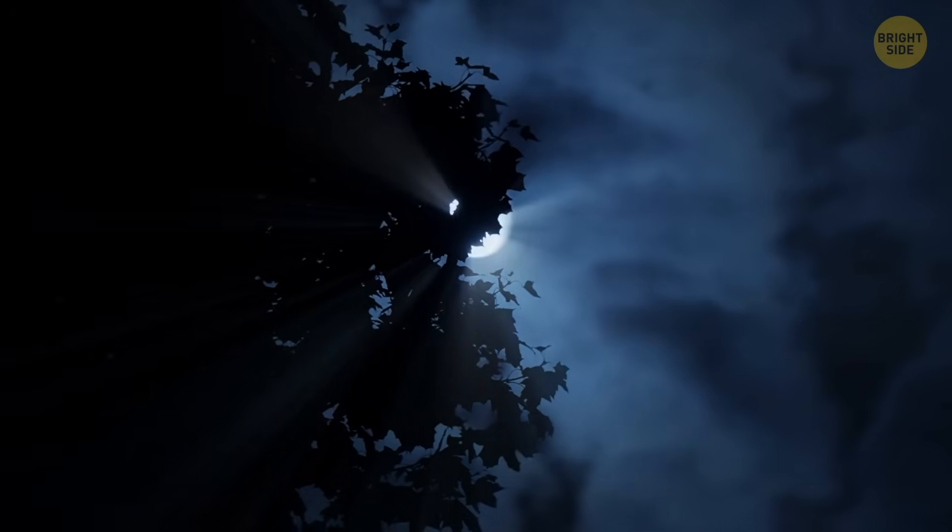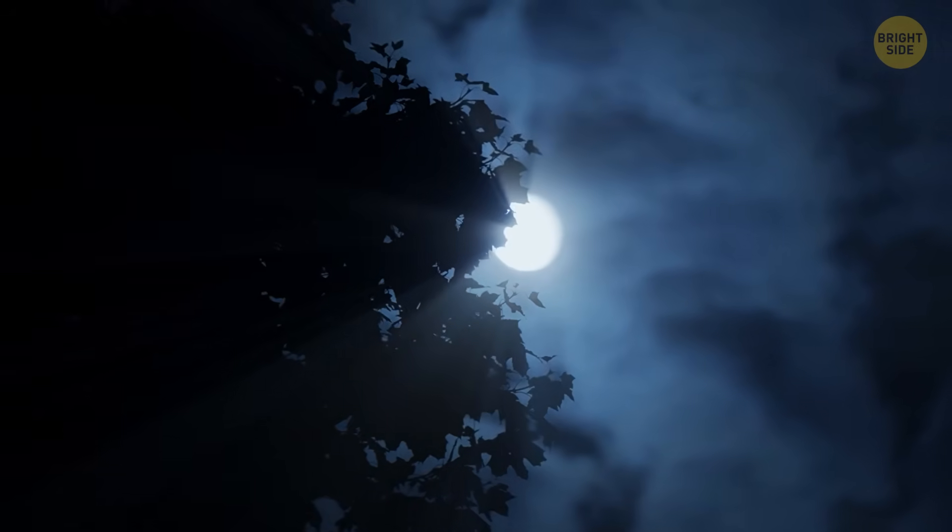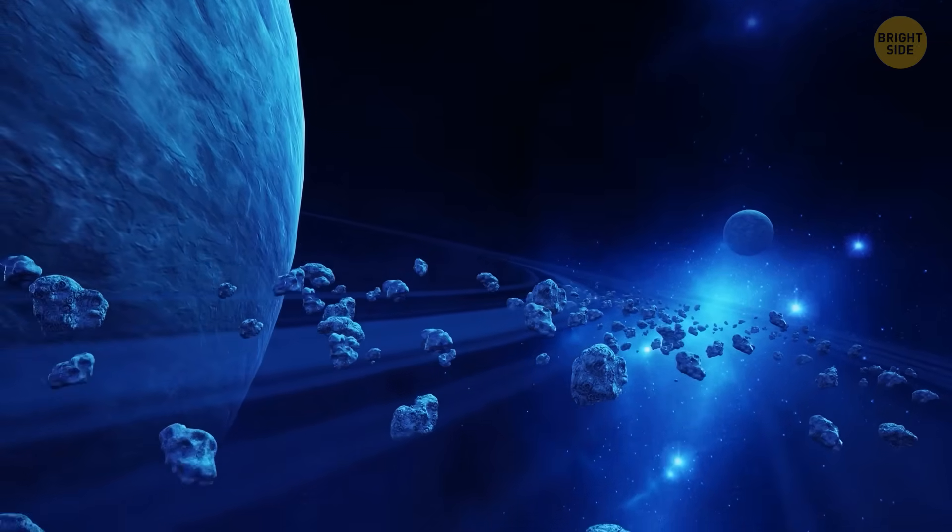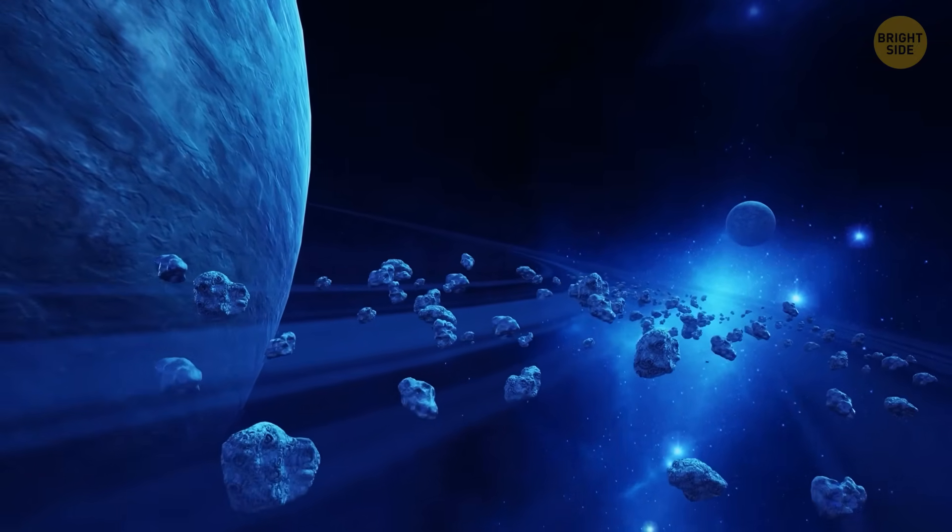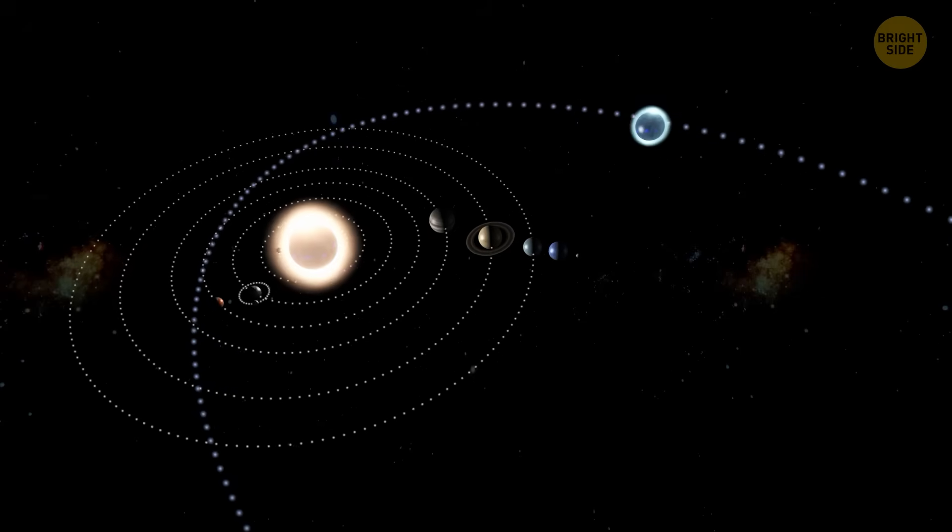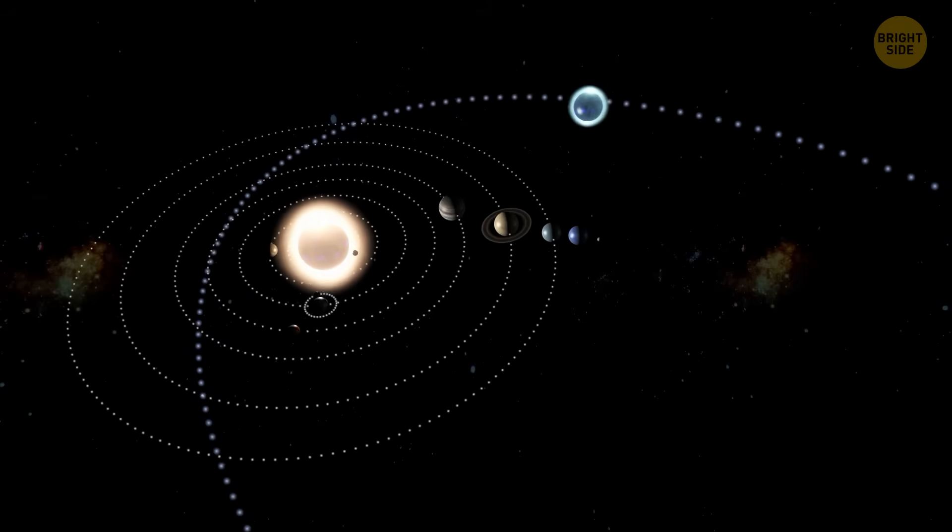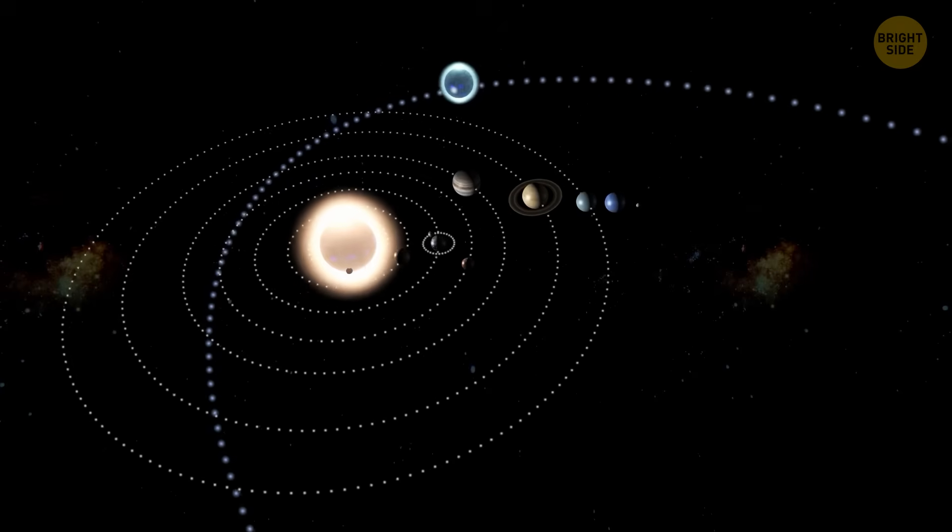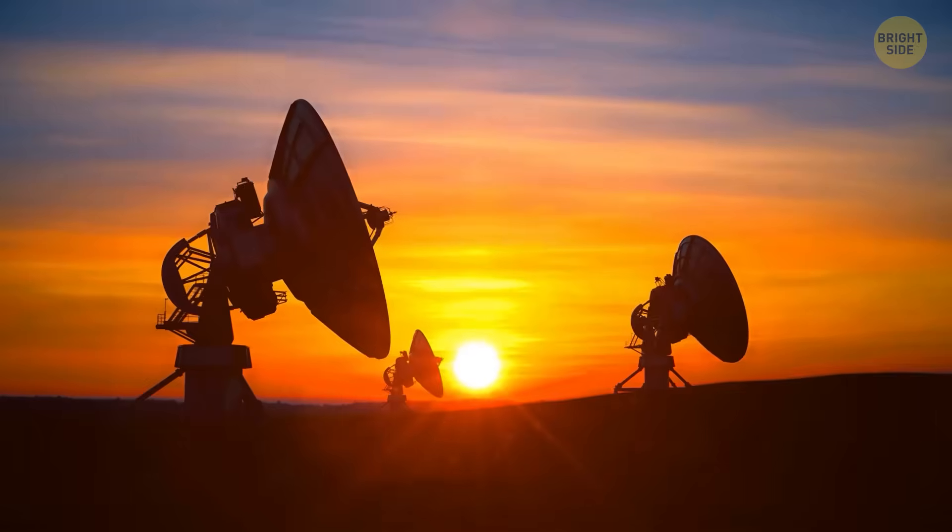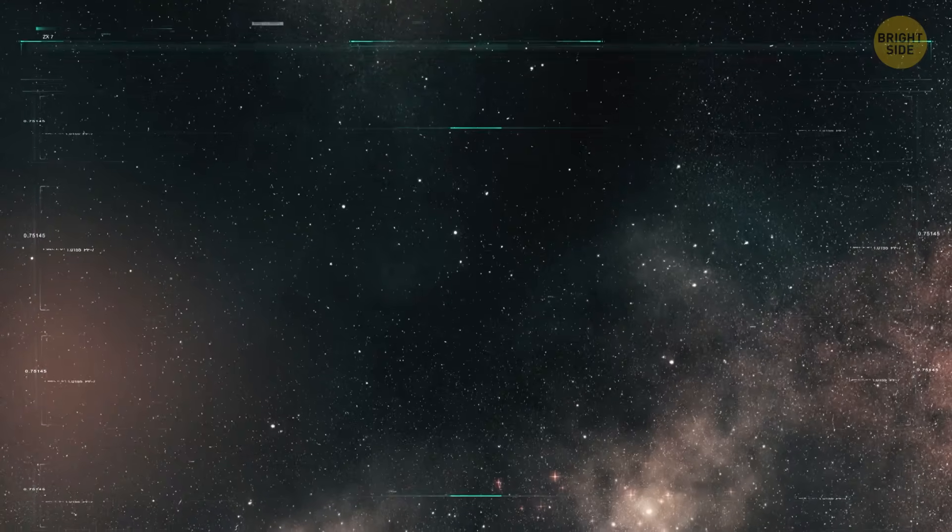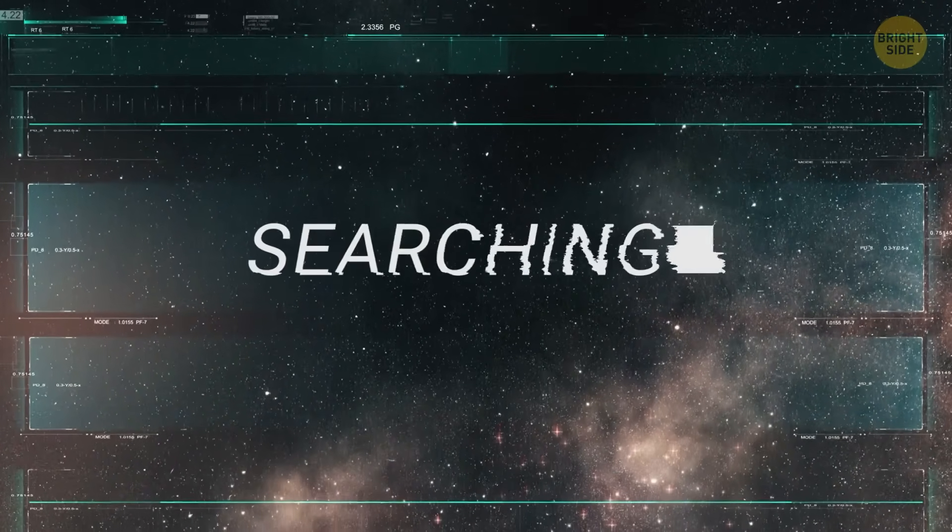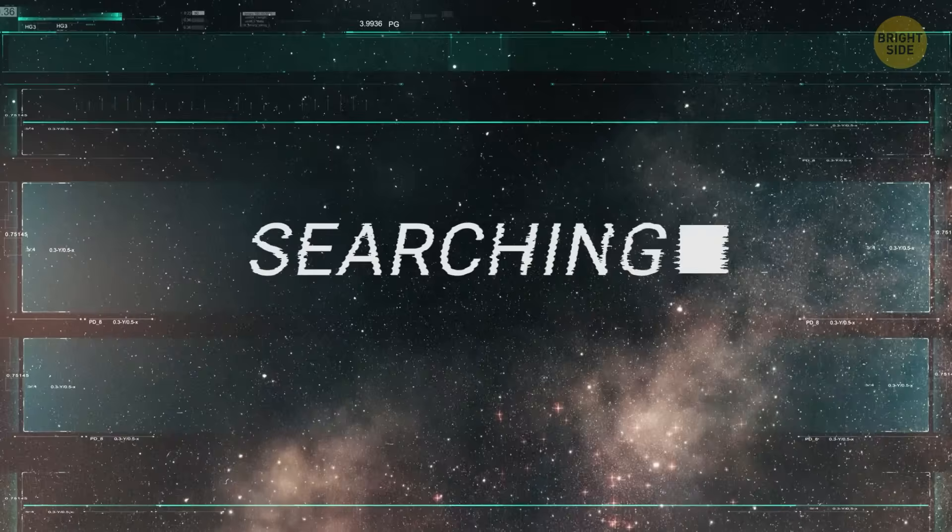There are some cool ideas about where Planet 9 came from. It might have started as a big planet that Jupiter once kicked out of the inner solar system, or it might have come from another star or even wandered around space on its own before getting caught by the Sun's gravity. Even though scientists have looked really hard using powerful telescopes, no one has actually seen Planet 9 yet. And so far, its existence is still just a theory.